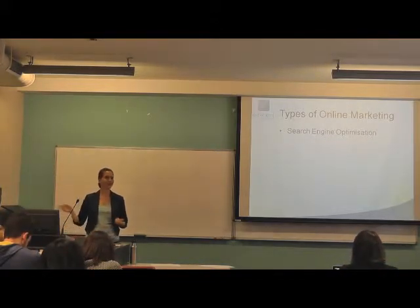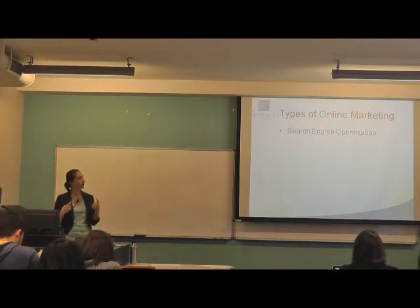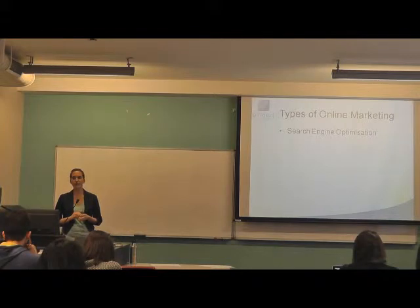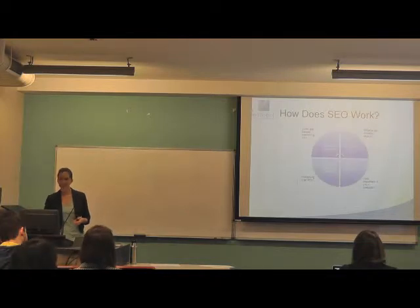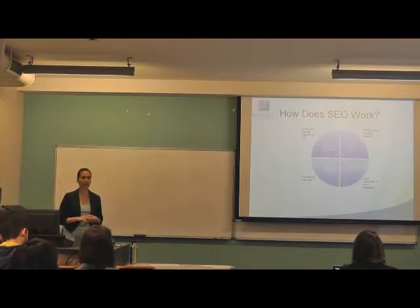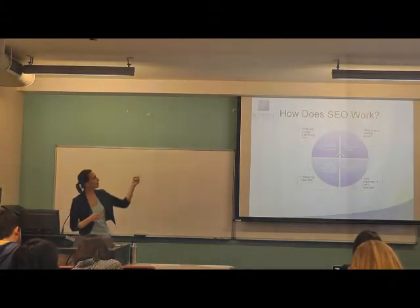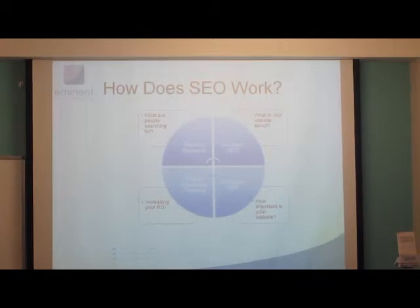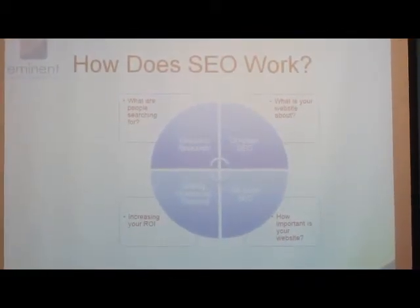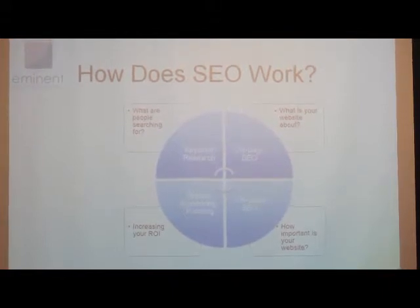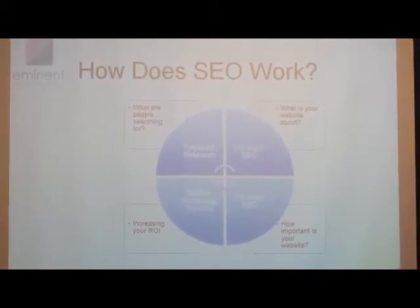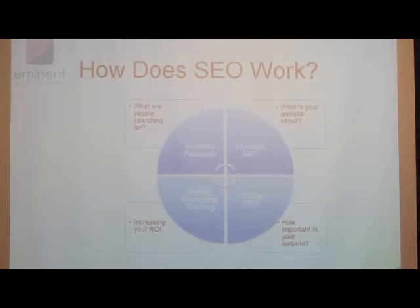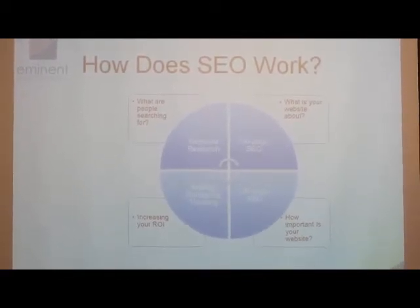We'll talk about a few types of online marketing. The first one I'm going to talk about is search engine optimization, because you know I specialize in that. There are really four aspects to SEO. The first one is keyword research — the research is really the base of any online marketing. With keyword research, we're looking at what people are searching for and how many people are searching for something. Because if we target the wrong keyword and no one's searching for it, we can be at the top of the search engines but we're not going to get any traffic, any sales, or any leads.